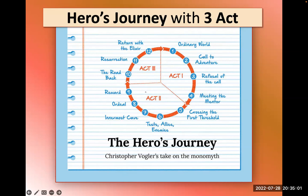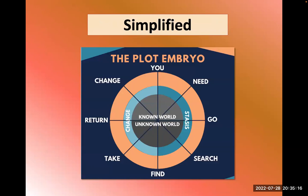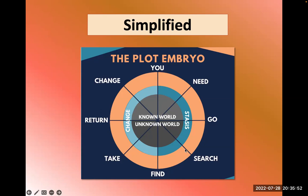The hero's journey can be viewed with a three-act structure overlaid. Different films focus on different parts — Act Two can be stretched out, Act One shortened, depending on what the film wants to emphasize. Simplified: you have a need, you search, you find it, you take it, you return, and now you're changed. We start in the known world, go into the unknown world — like a new relationship or new job — and return changed.